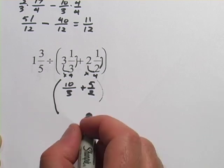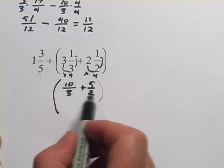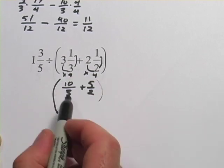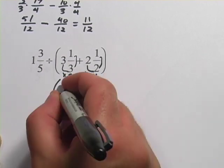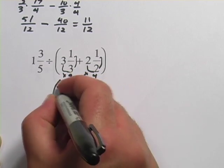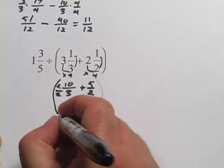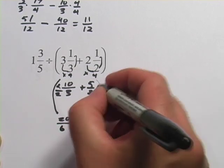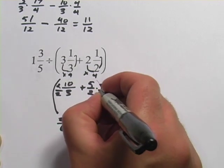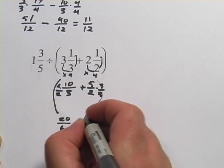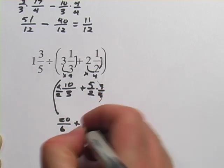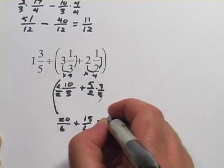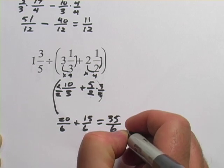So I've got 10 thirds plus 5 halves. I want to add these. So I need to convert them so they have the same denominators. I'm going to multiply this one by 2 over 2. 2 times 10 is 20. 2 times 3 is 6. This one I'm going to multiply by 3 over 3. 5 times 3 is 15. 2 times 3 is 6. Now I have 20 over 6 plus 15 over 6. I can add those together. I get 35 over 6.